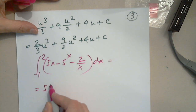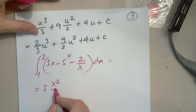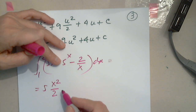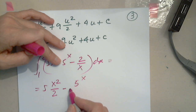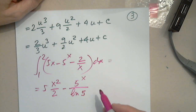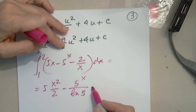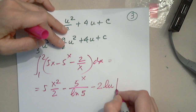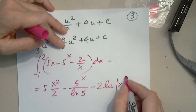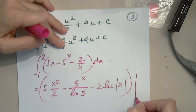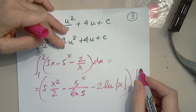So I have 5x squared over 2. I have to be very careful here because the antiderivative of 5 to the x is 5 to the x over natural log 5. And this is minus 2 natural log of the absolute value of x, evaluated from 1 to 2.